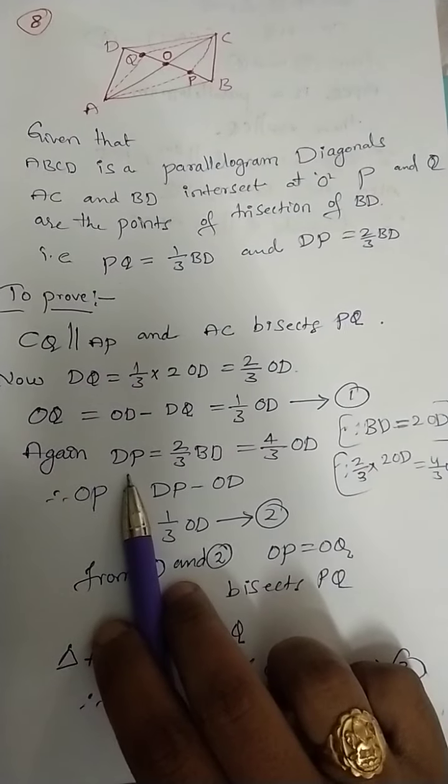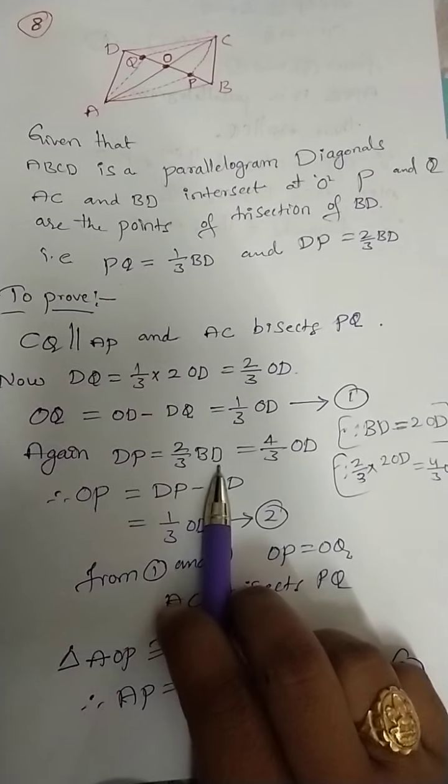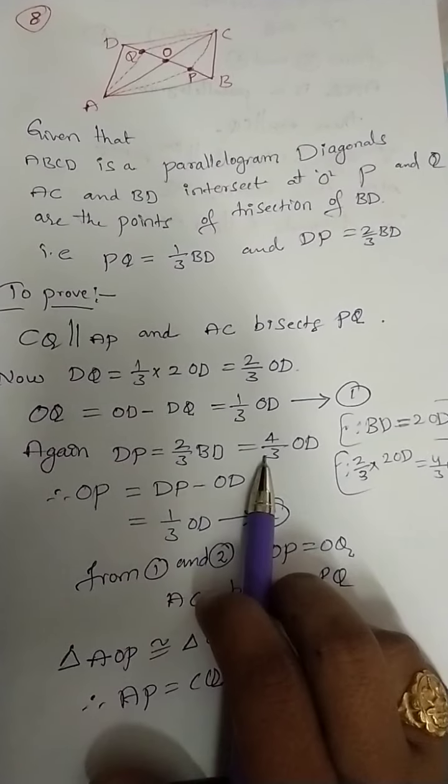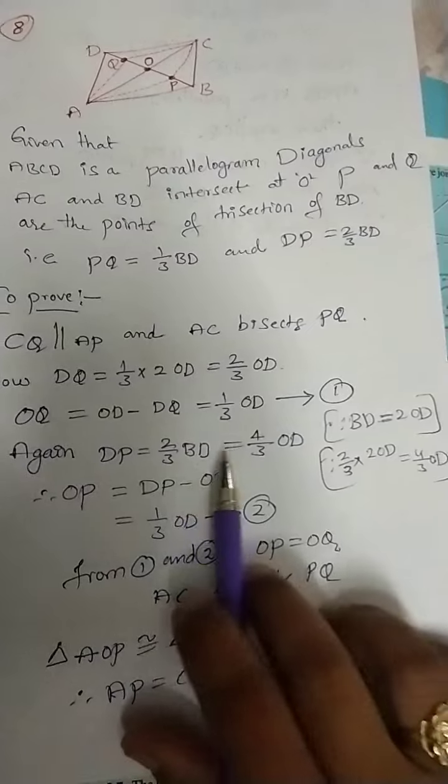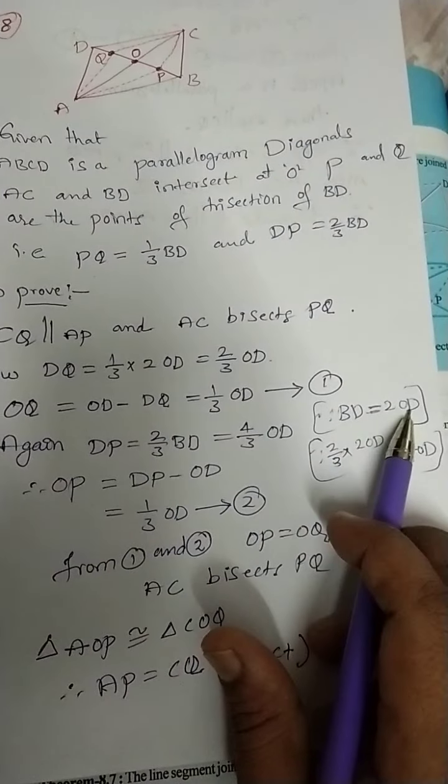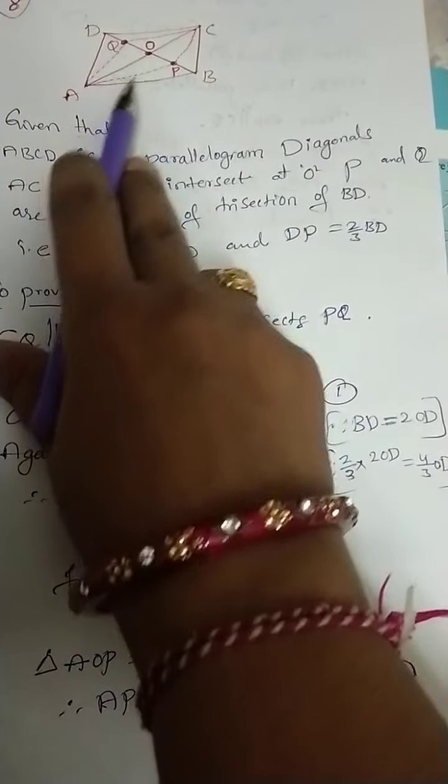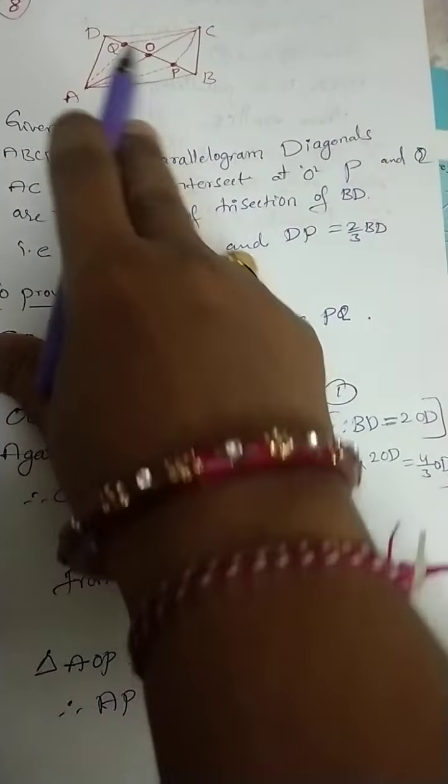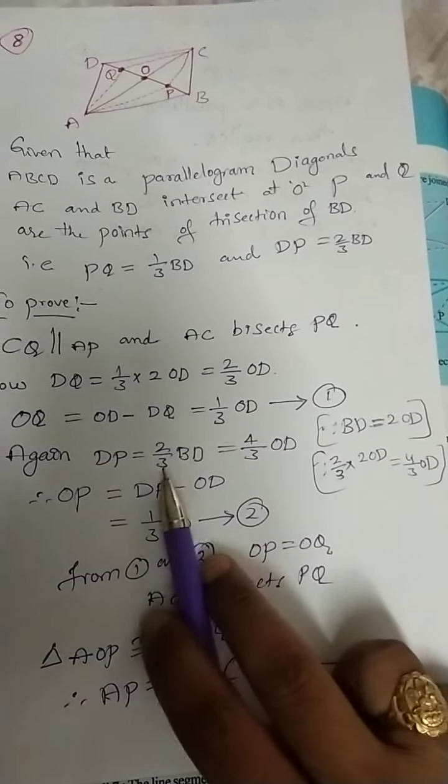Again, DP equals 2/3 BD. Again, BD equals 2 OD. BD equals 2 into OD. Now, BD value here you can substitute, that is OD.